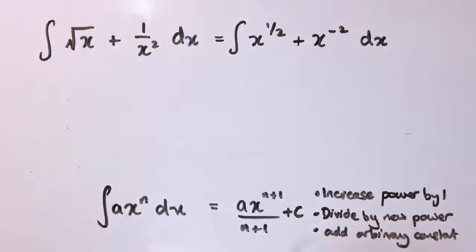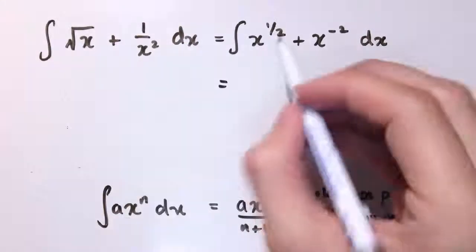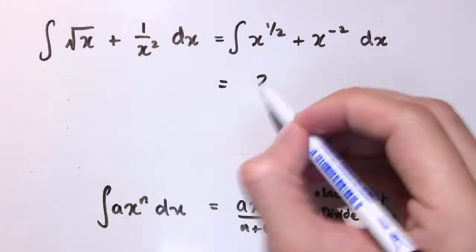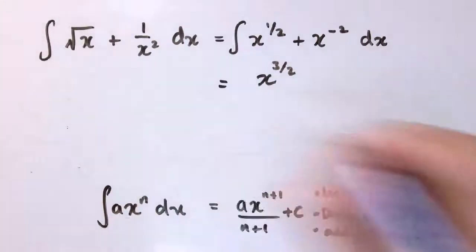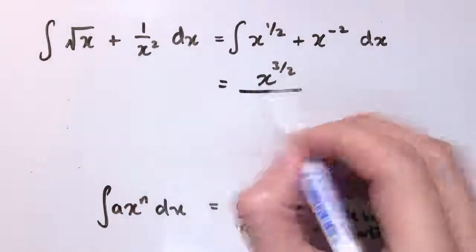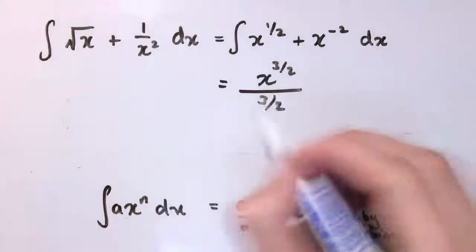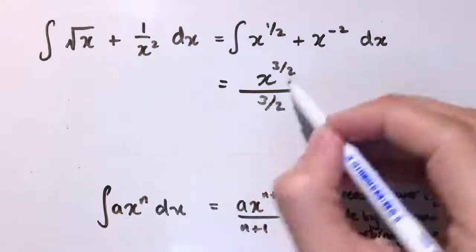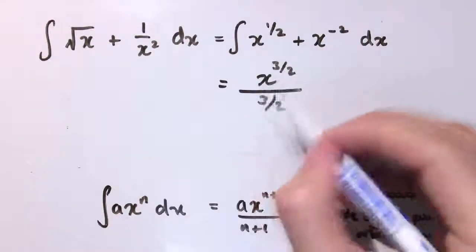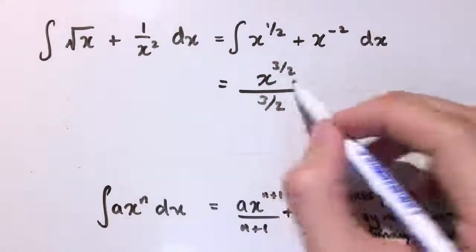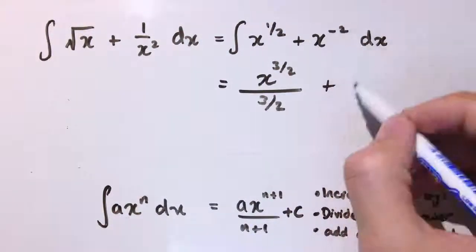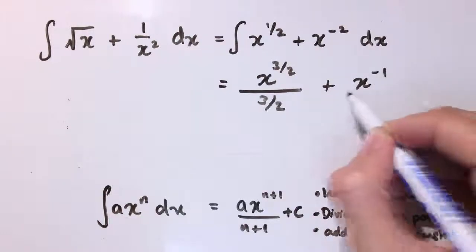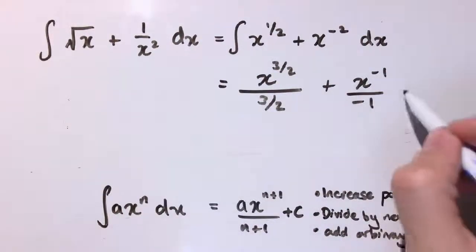Now I can just apply the rules here. So I'm going to increase the power by 1 here and get x to the 3 over 2 and divide by the new power. I wouldn't usually recommend writing it down exactly like this, but I'm going to do it just for now because I've got a fraction and a fraction here. We'll simplify it at the next line. x to the minus 2, increase the power by 1 to give x to the minus 1, divide by the new power, and add on a constant.